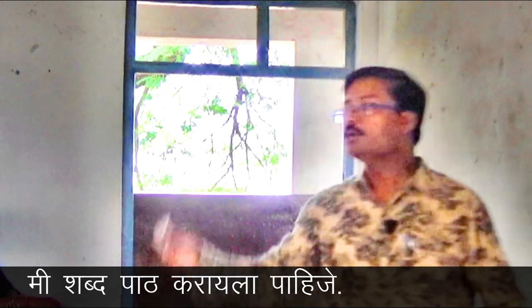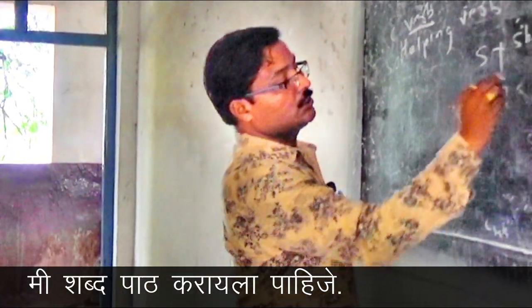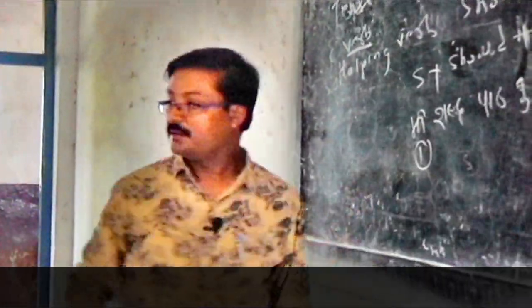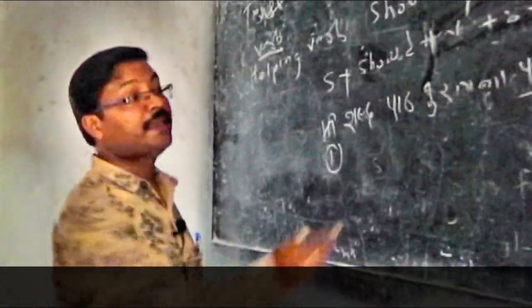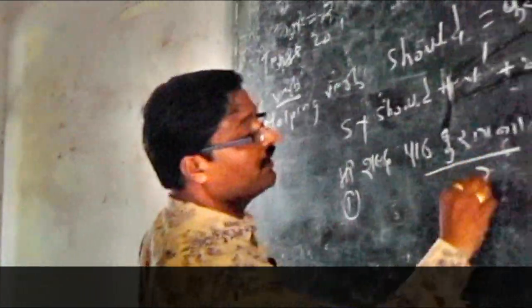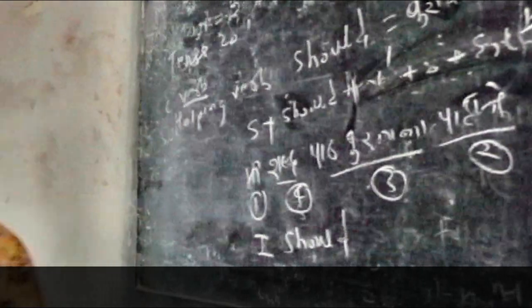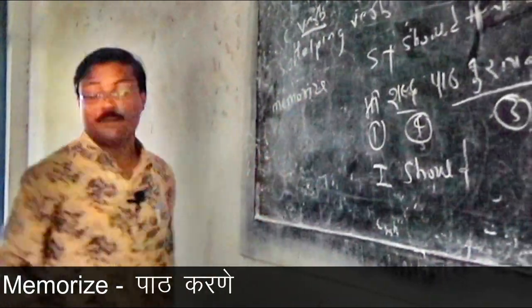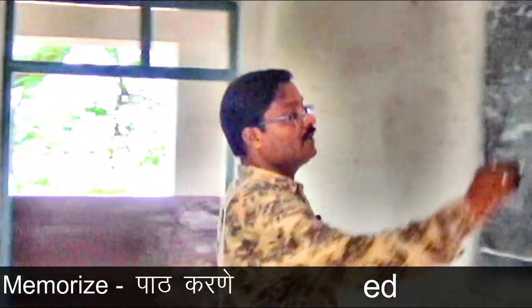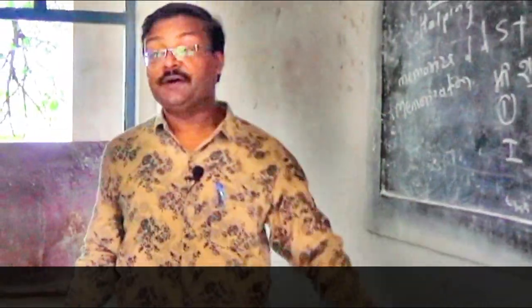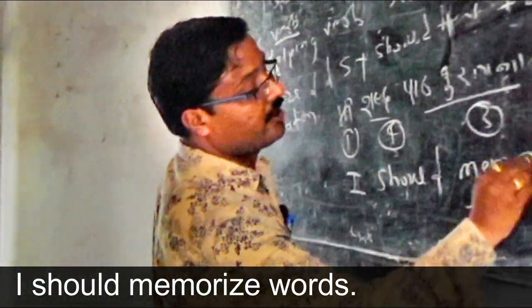'Mi shabda paath karala paaije' — I should memorize words. Go from last to first: Mi means I, paaije means should, paath karane means memorize. Memorize means shikne/paath karane. Second form: memorized, third form: memorized, noun form: memorization. So: I should memorize words. Problem arises with vocabulary only — you must know the word.